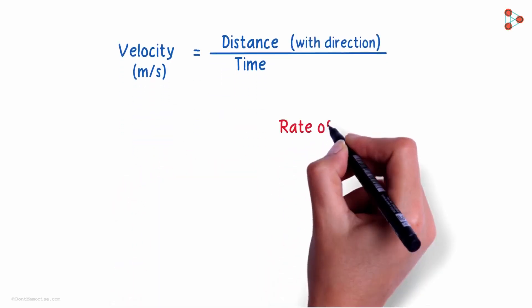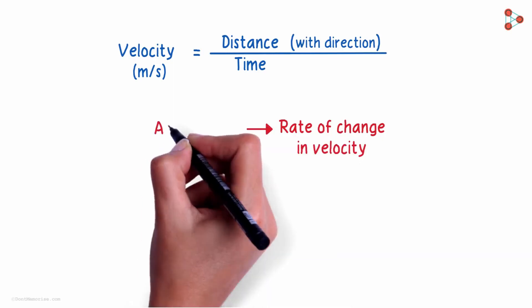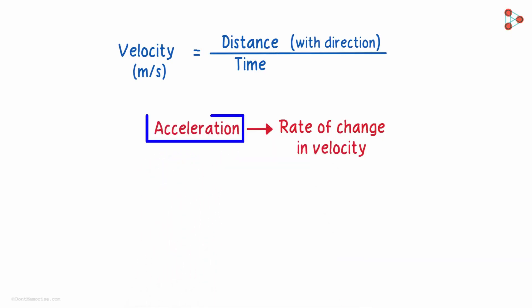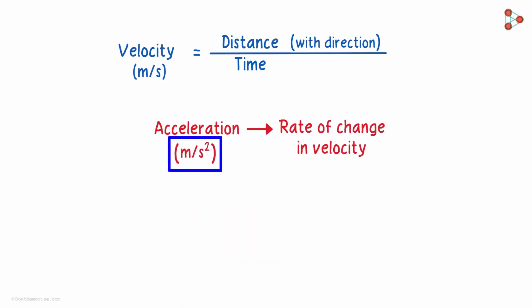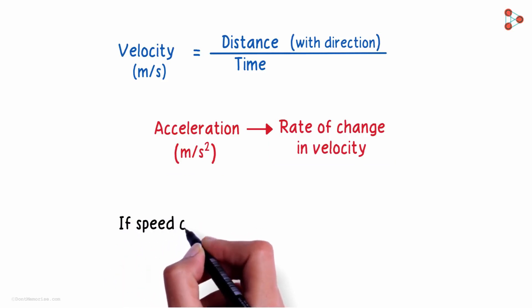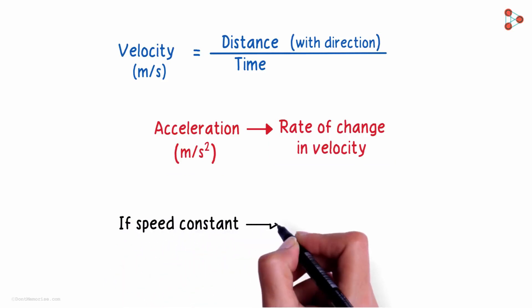We have also learnt that change in velocity is called acceleration and the standard unit for acceleration is meters per second squared. It is the measure of the change in velocity. So an object moving in a straight line at a constant speed has zero acceleration.